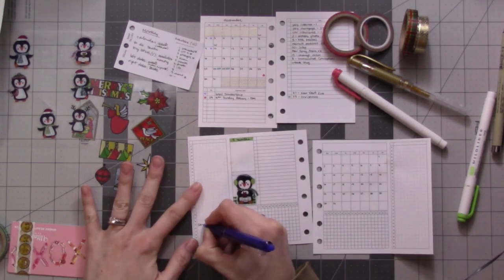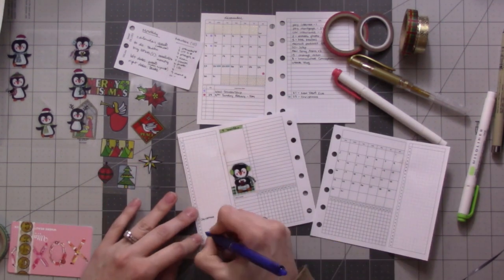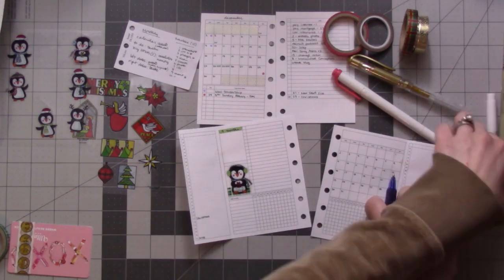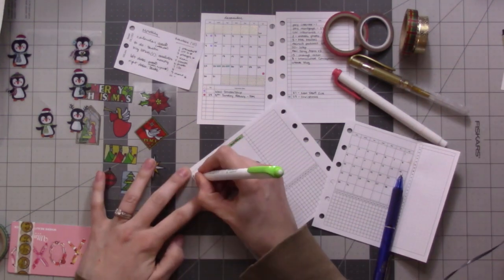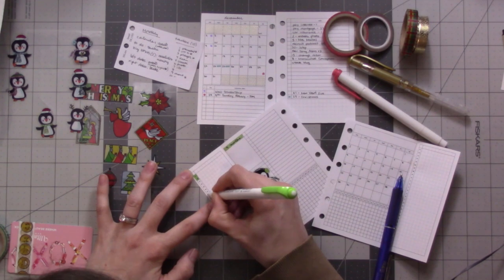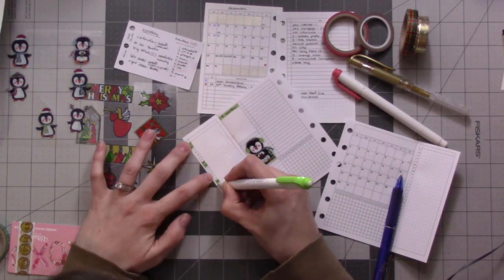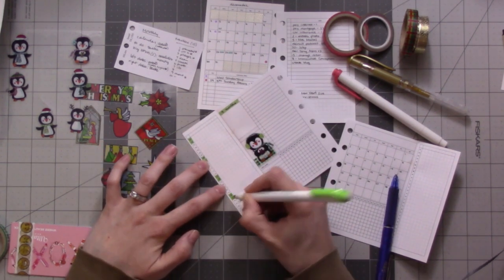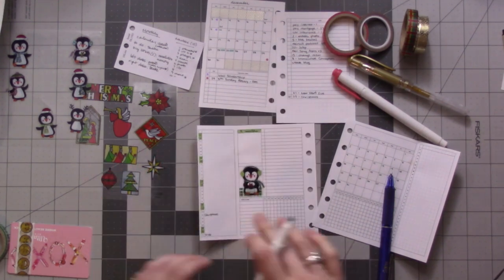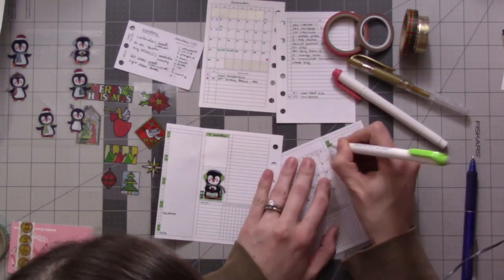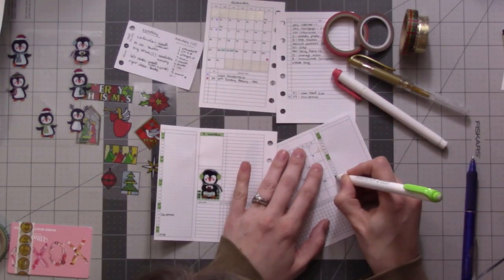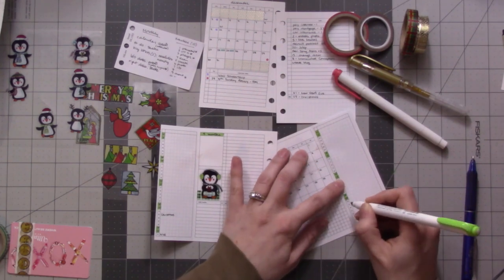On the left here I'm having all of the events for the month, so I'm just filling in a couple. There's not that many. Highlighting the weekends so I can keep track of what day of the week a day is a little bit easier. Same thing on the other side.